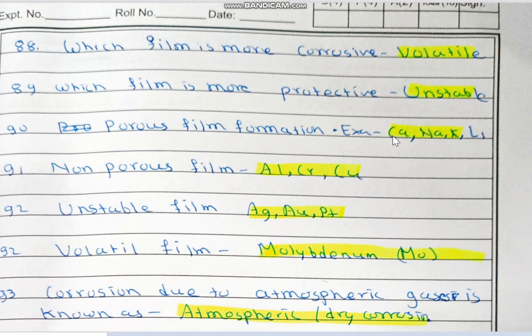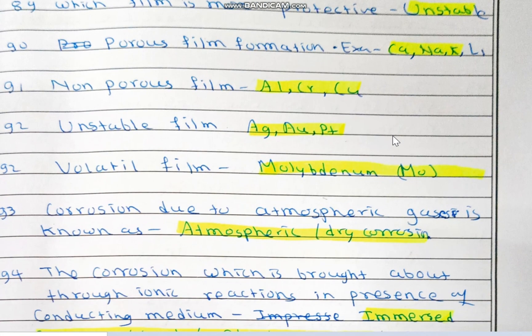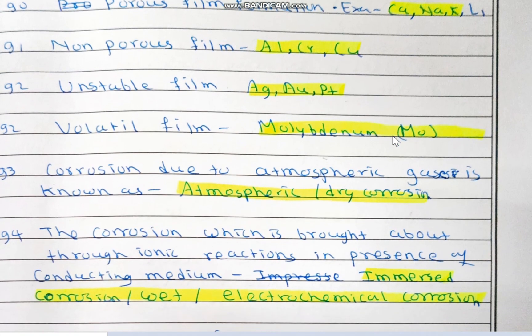Which film is more corrosive? The volatile film is more corrosive, which is formed in molybdenum. Which film is more protective? The unstable film, which is formed in gold, silver, and platinum. Porous film formation takes place in alkali metals and alkaline earth metals like calcium, sodium, potassium, and lithium. Non-porous film formation takes place in aluminum, chromium, and copper. Examples of unstable film: gold, silver, platinum. Volatile film: molybdenum.